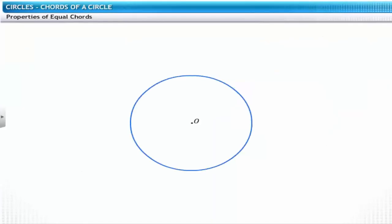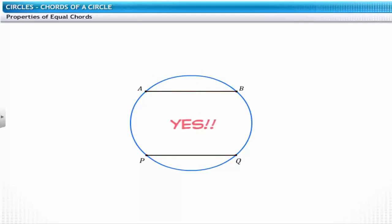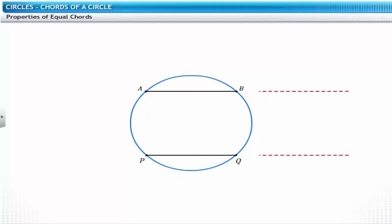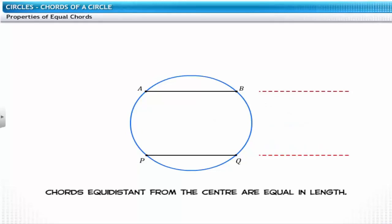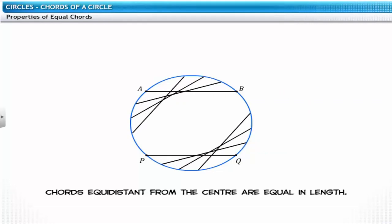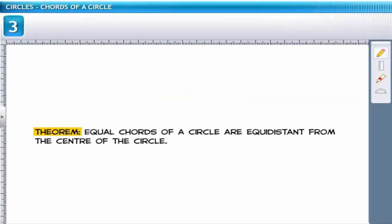Look at the circle. Let's draw two chords which are equidistant from the center of the circle. If you don't know the center of the circle, would it be possible to draw chords that are equidistant from the center? Yes, it's possible. If we measure the chords, we find both chords are congruent. This means that chords which are equidistant from the center will be equal in length. So even if you don't know the center and you draw congruent chords anywhere inside the circle, they will be equidistant from the center. Based on this observation, we arrive at a theorem: equal chords of a circle are equidistant from the center.